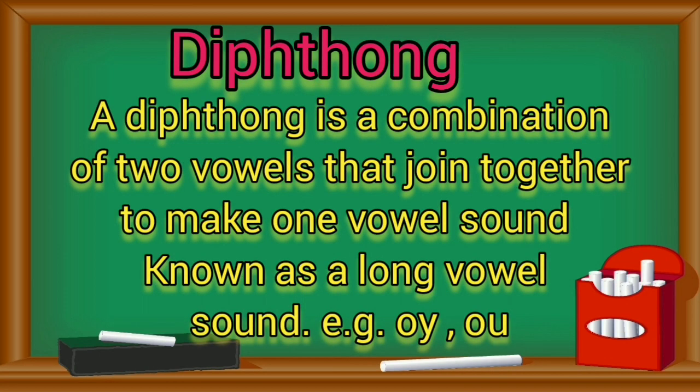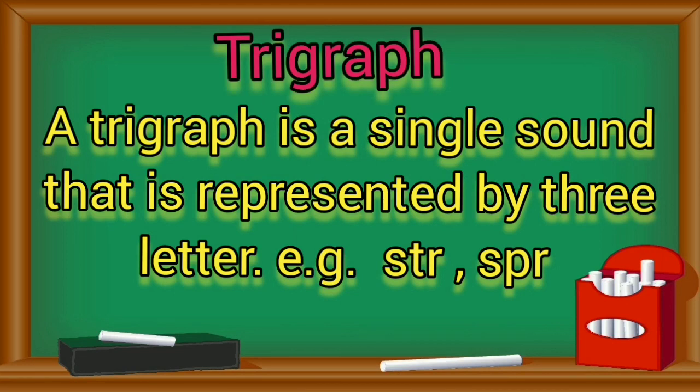Diphthong. A diphthong is a combination of two vowels that join together to make one vowel sound, known as a long vowel sound. Trigraph. A trigraph is a single sound that is represented by three letters. For example, STR, SPR.